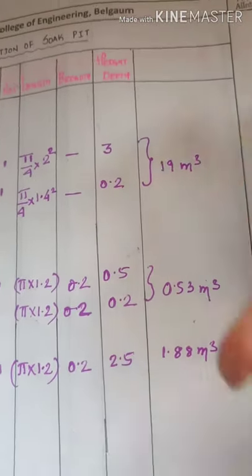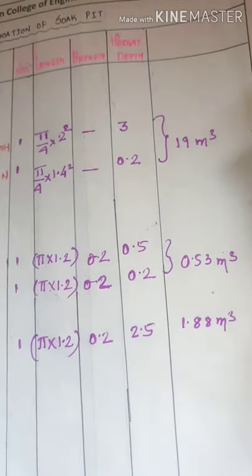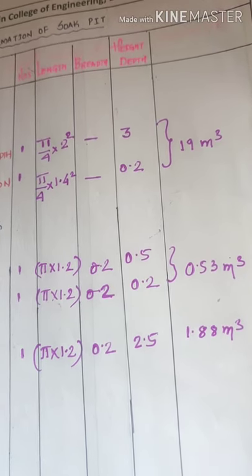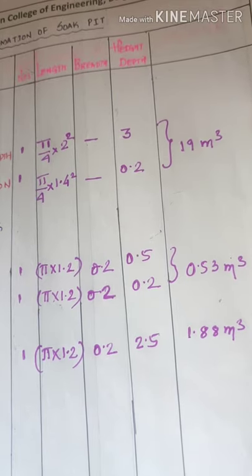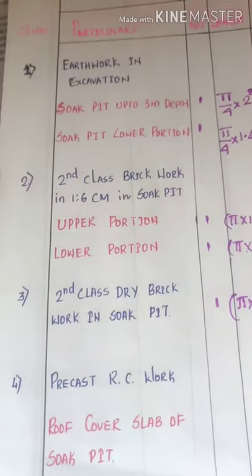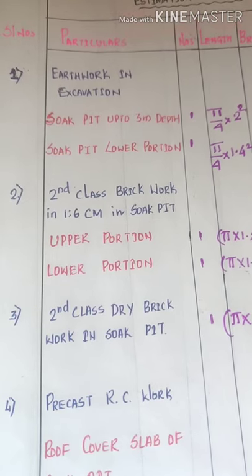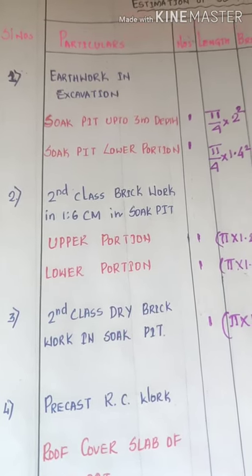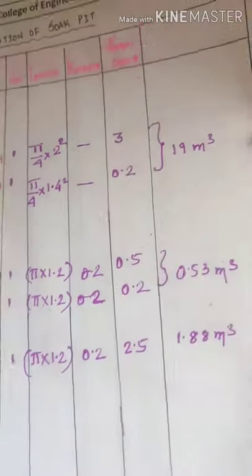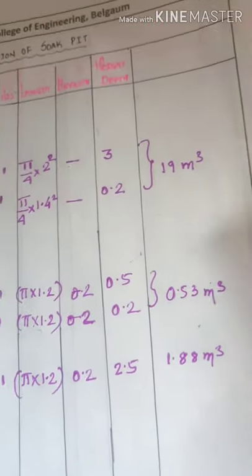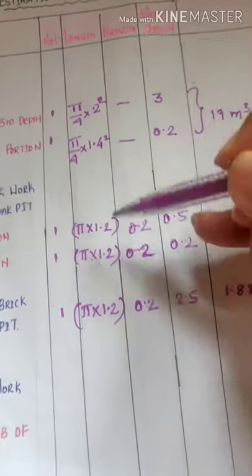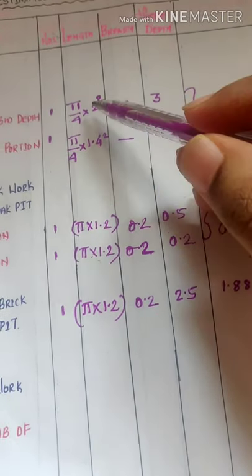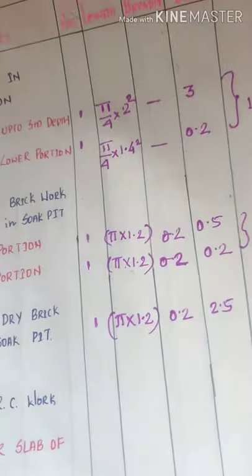I hope you followed these three parts. For now I will only consider three quantities: excavation, second class brickwork, and second class dry brickwork. The next quantity we will take in the next part. If you have any doubt with this, please feel free to ask. Now you might be confused about why I used π × 1.2 for brickwork and π/4 × D² for excavation. So let me explain that.